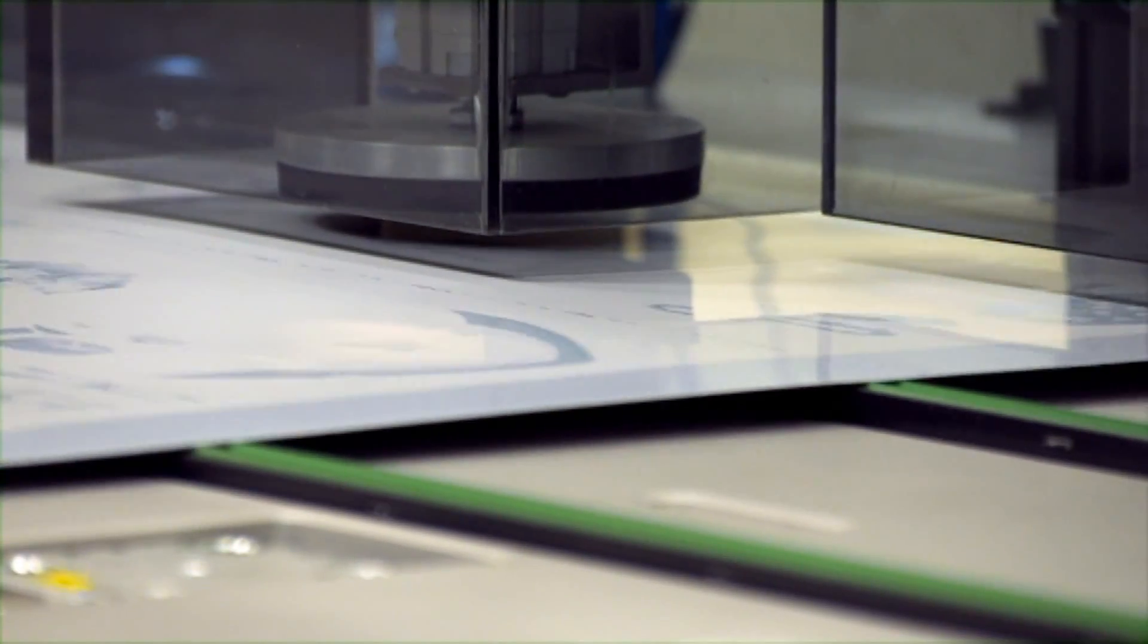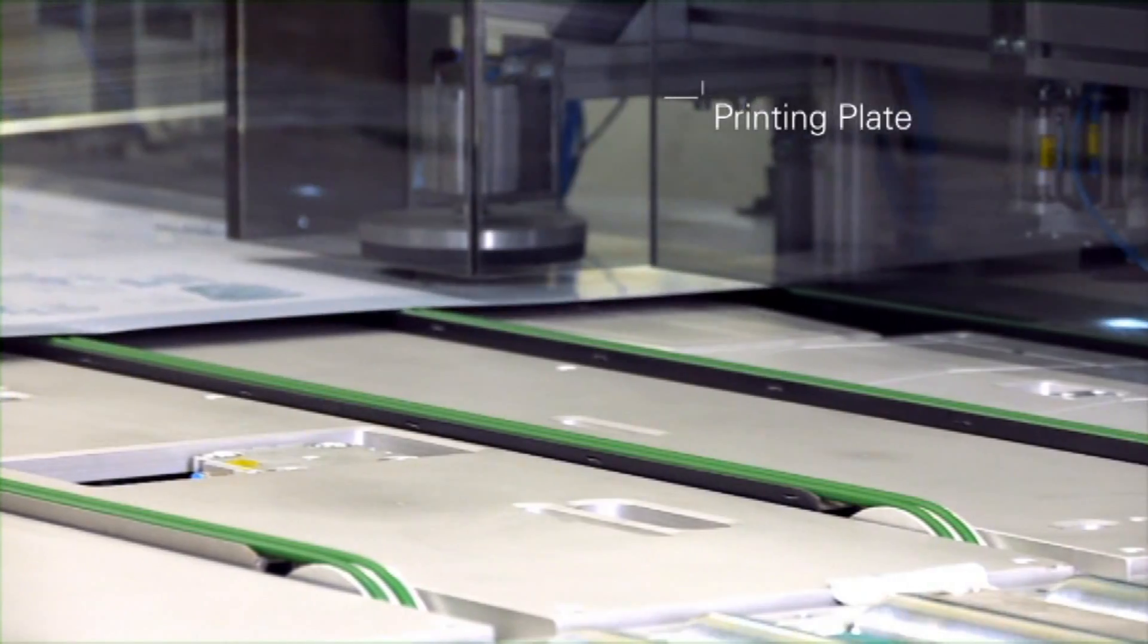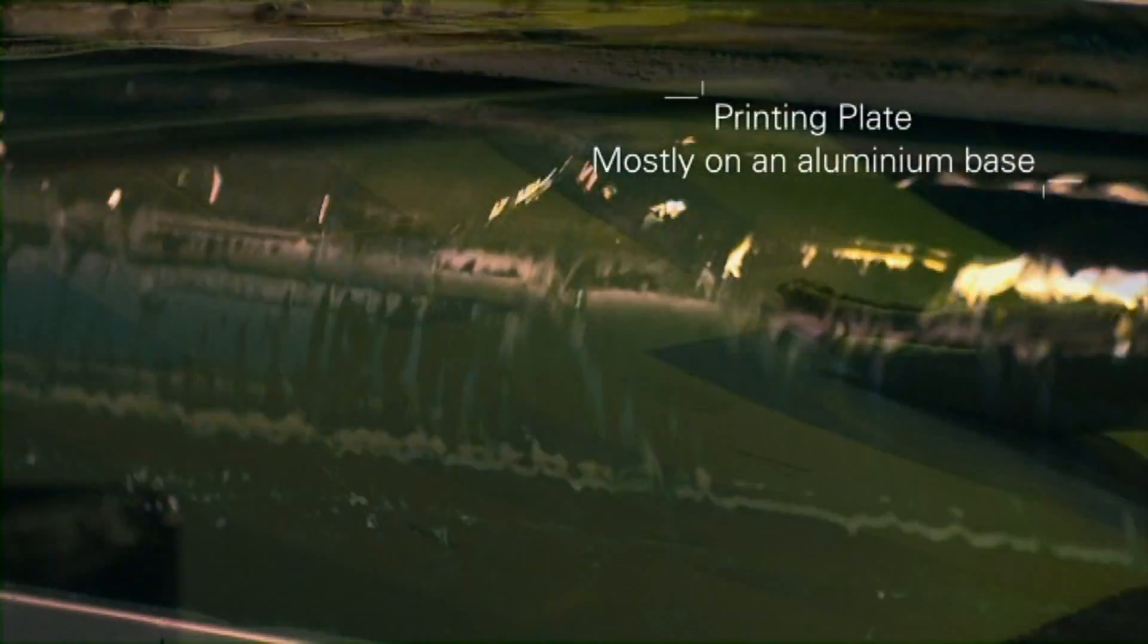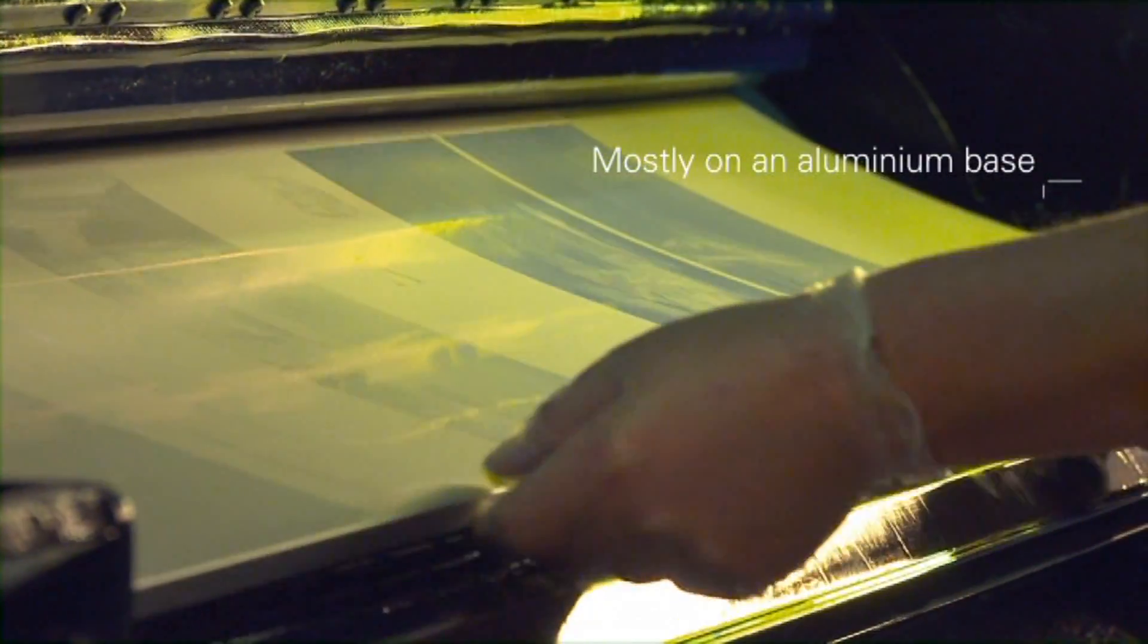The key element for any offset printing business is the printing plate and most printing plate types use aluminum for a base. The advantage of using aluminum for a printing plate is that it guarantees absolute dimensional stability on the printing press.